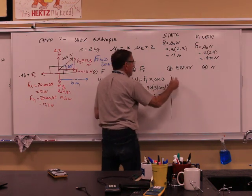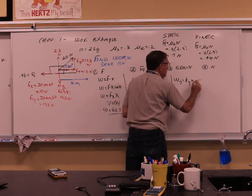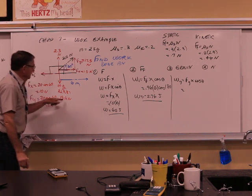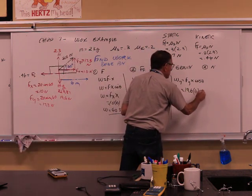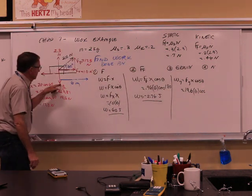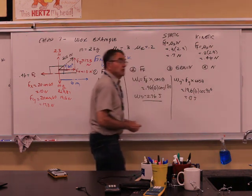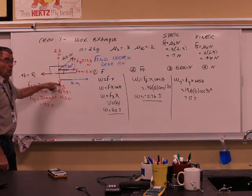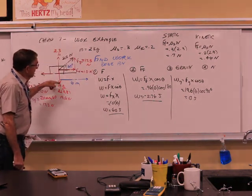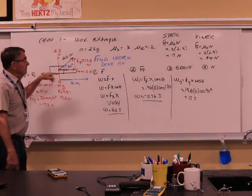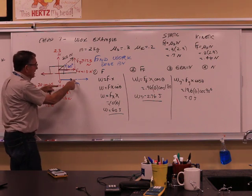Work done by gravity: force times distance times cosine of the angle. The force of gravity is 19.6 newtons, the distance is 6 meters, and the angle between gravity and the displacement is 90 degrees. Cosine of 90 is 0, so work done by gravity equals 0 joules. There's no work done by gravity because gravity acts vertically and the displacement is horizontal — there is no component of the vertical force in the x direction.